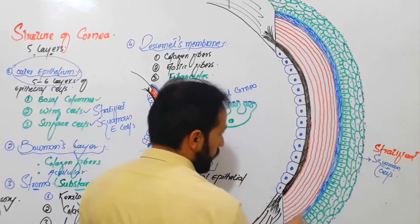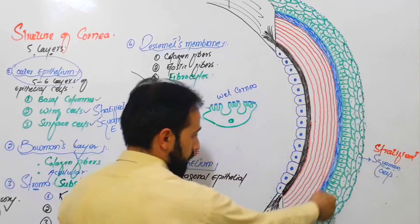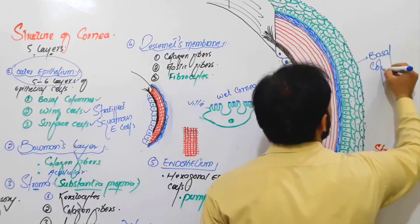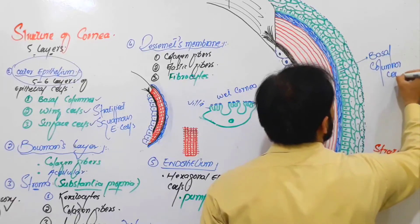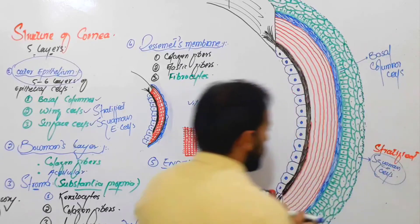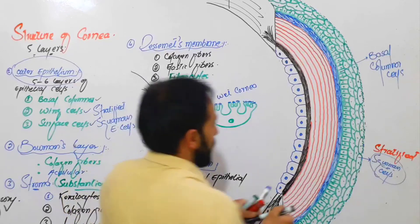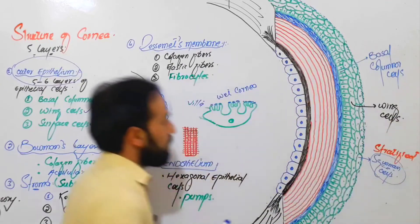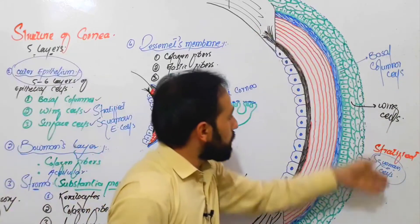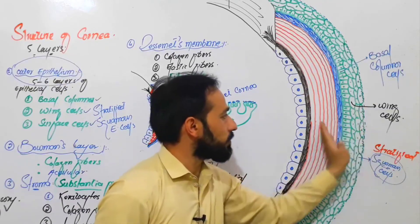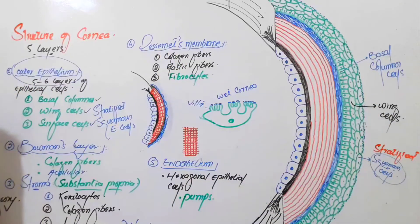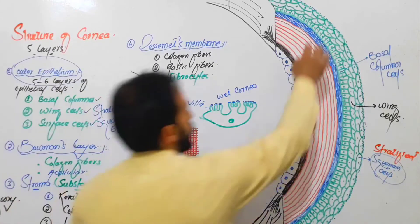In the base of this outer epithelium, you can see columnar-shaped cells — the basal columnar cells. The outer cells are squamous cells and in between them there are the wing cells. Whenever there is any damage to the outer epithelium, these basal columnar cells will rapidly regenerate through mitosis, fill the gap again, and the cornea will be kept safe.